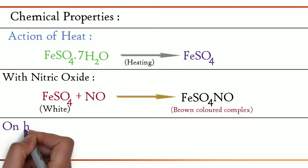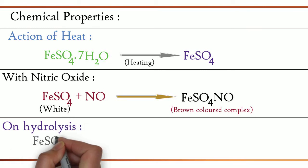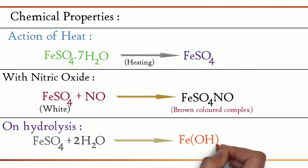Next, hydrolysis. FeSO4 + 2H2O gives Fe(OH)2 + H2SO4. Ferrous sulfate on hydrolysis produces ferrous hydroxide.